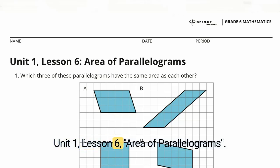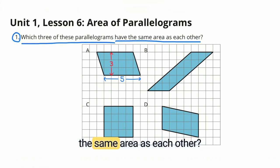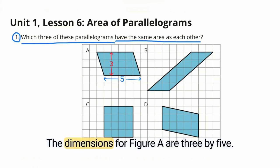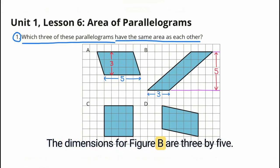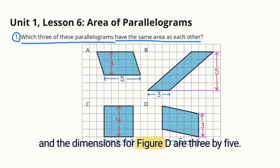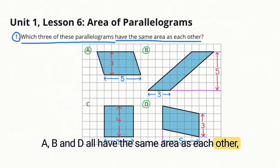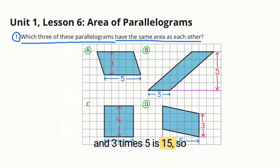Unit 1, Lesson 6: Area of Parallelograms. Number 1. Which three of these parallelograms have the same area as each other? The dimensions for figure A are 3 by 5, the dimensions for figure B are 3 by 5, the dimensions of figure C are 4 by 4, and the dimensions for figure D are 3 by 5. Parallelograms A, B, and D all have the same area as each other, and 3 times 5 is 15, so their area would be 15 square units.